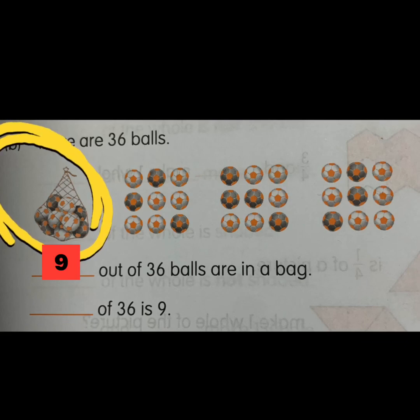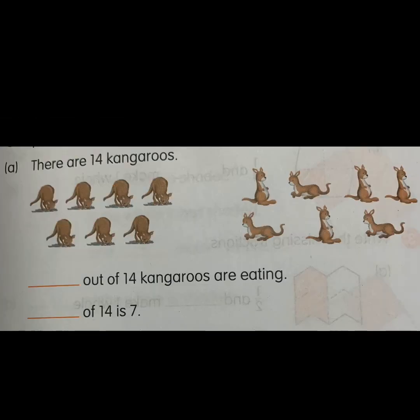Check out the answer for this sum: nine out of 36 balls are in a bag, or you can write this as quarter of 36 is nine. That is, 36 is divided into four groups, each group is one quarter, and one quarter of 36 is nine.